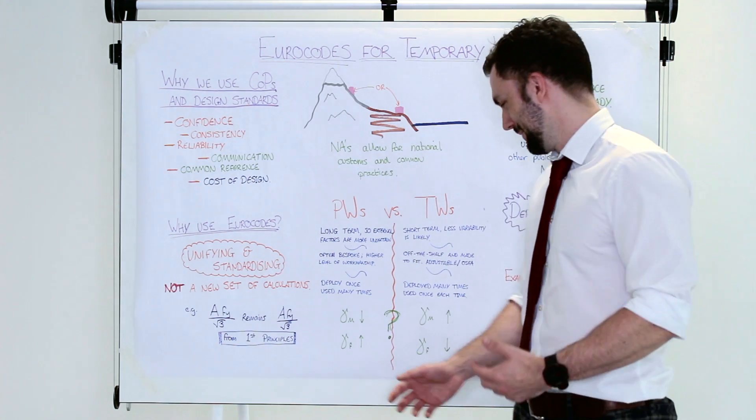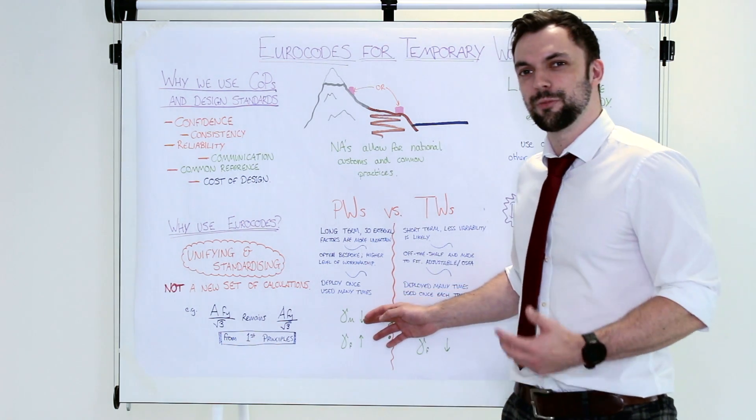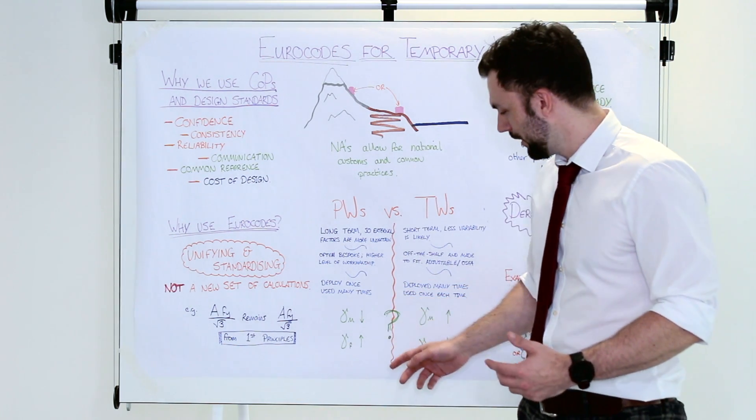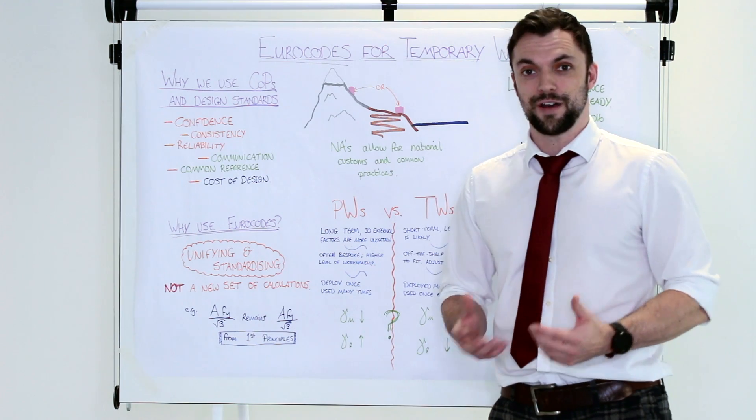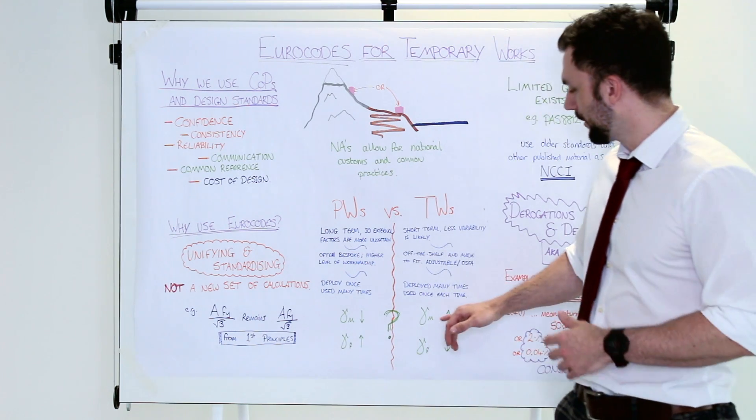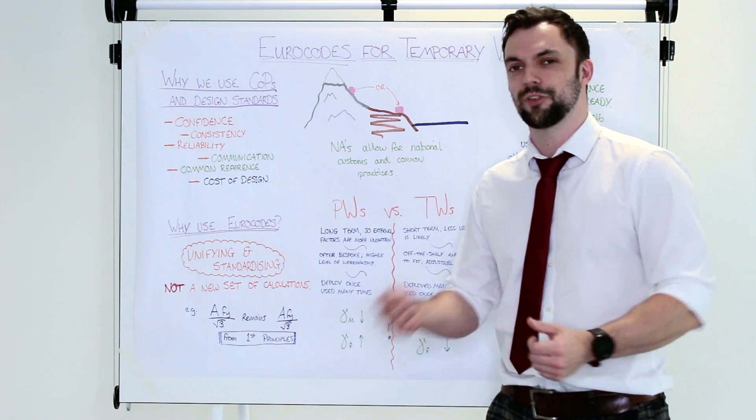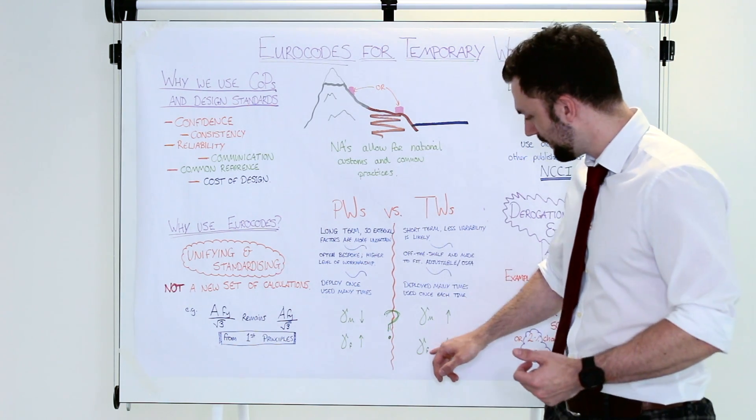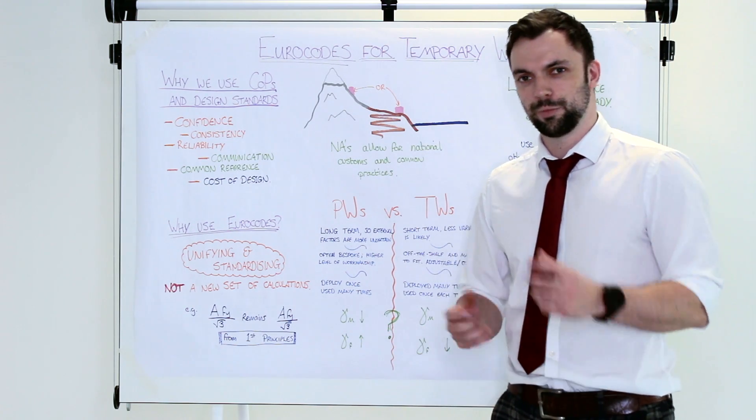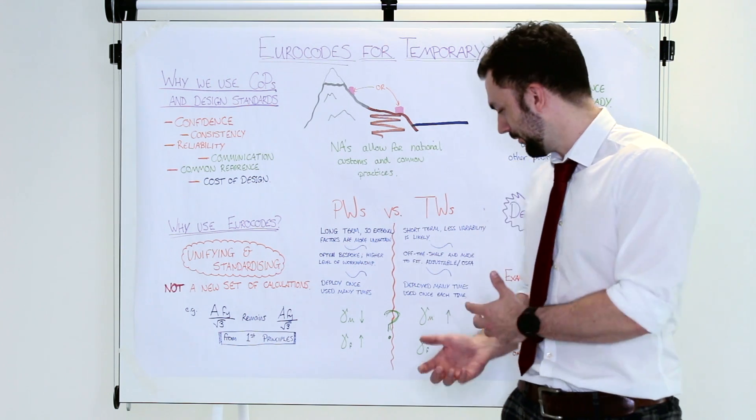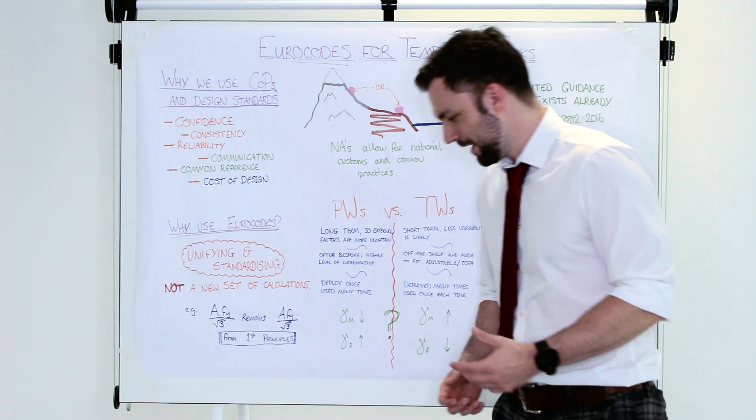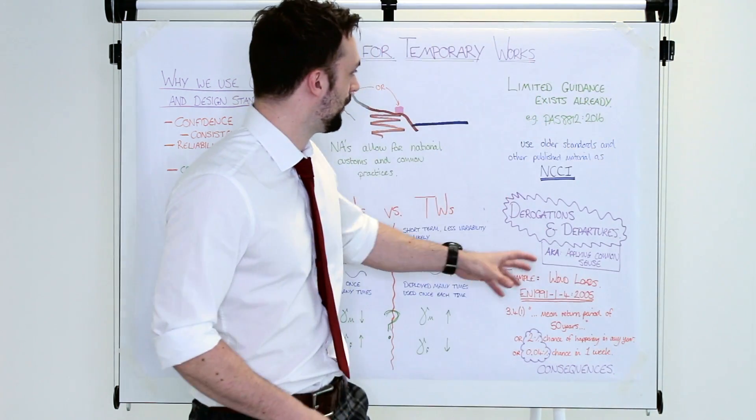So here's my idea. Would you reduce the material factors with permanent works, but increase the action factors? And with temporary works, the opposite way around. Increase the material factors. You want this temporary bit of kit to last and be used again and again. But the factors that affect the actions on it will be smaller because it's not as uncertain. There's less time. I use the example of wind loads later on down here.